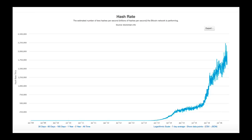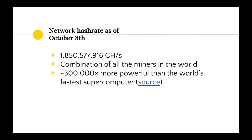Here's the hash power of the Bitcoin network since its very beginning. As you can see, it's a hockey stick-like curve — it's gone up and up exponentially. As of October 8th, the network hash rate was over almost 2 billion gigahashes per second. That's the combination of all miners in the world, and it is 300 times more powerful than the world's fastest supercomputer. The amount of computing power directed at the Bitcoin network is unprecedented.